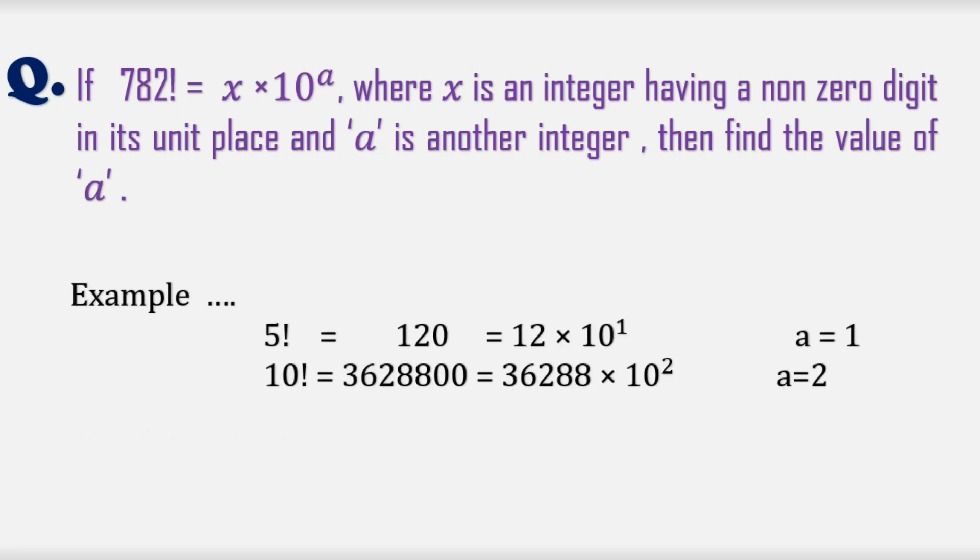For example, we can write 5 factorial is equal to 120, which equals 12 multiplied by 10 to the power 1. Here a is equal to 1. Similarly, we can write 10 factorial is equal to 3628800, which equals 36288 multiplied by 10 to the power 2.